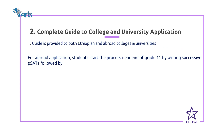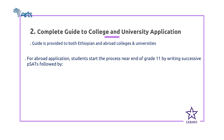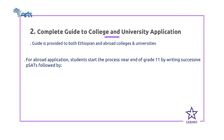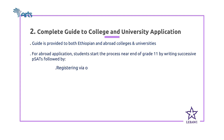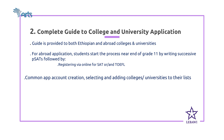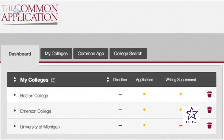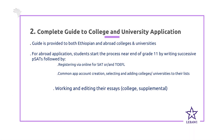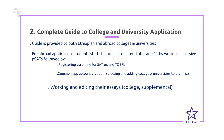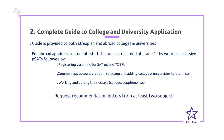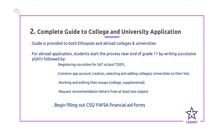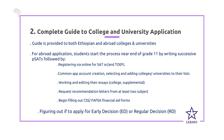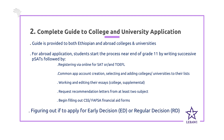For the abroad application, students start the process in grade 11. They begin by writing successive PSATs, then register for SAT and TOEFL, and create Common App accounts. They select and add colleges and universities to their Common App accounts, work on editing their college and supplemental essays, and gather recommendation letters from two subject teachers and one from a counselor. They also fill out CSS and FAFSA financial aid forms, and finally decide whether to apply for early decision or regular decision.